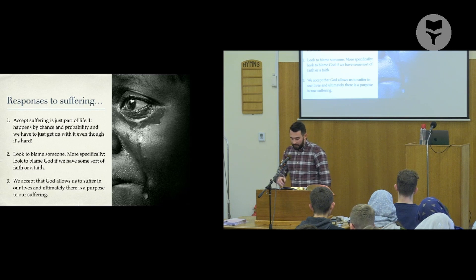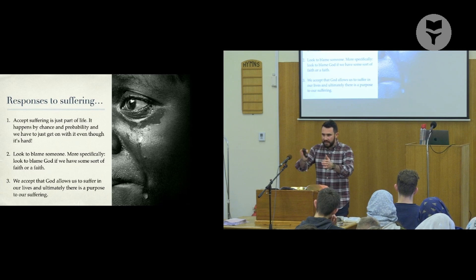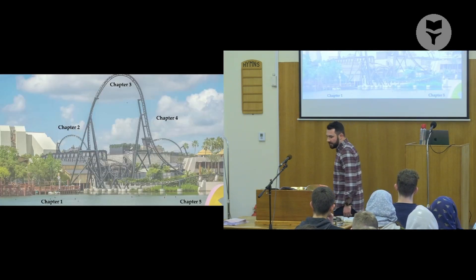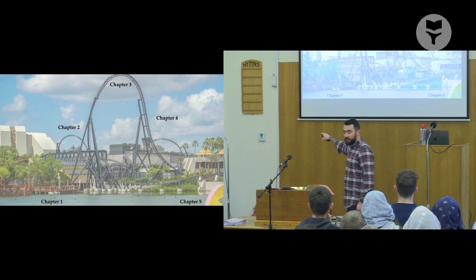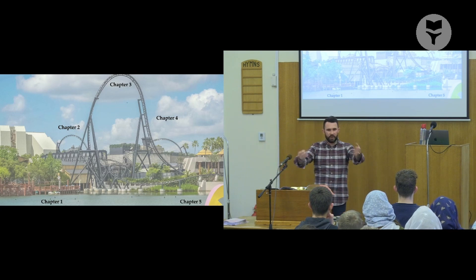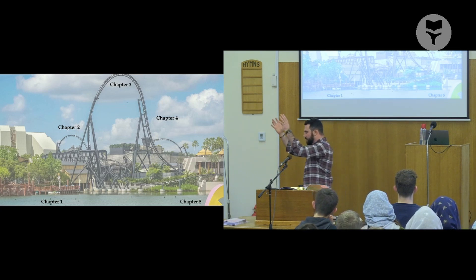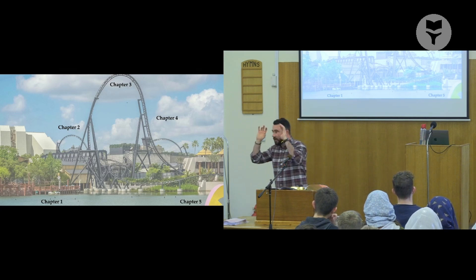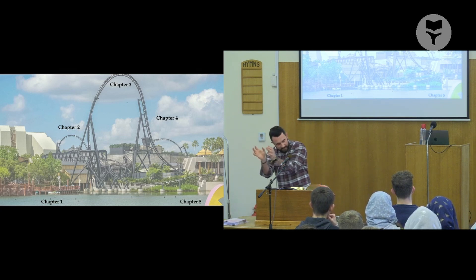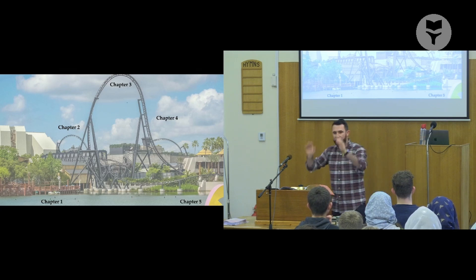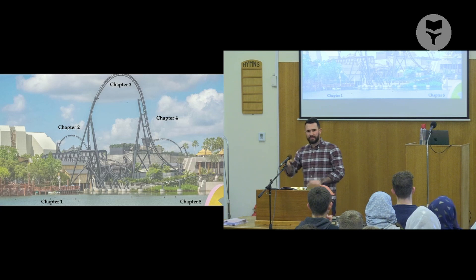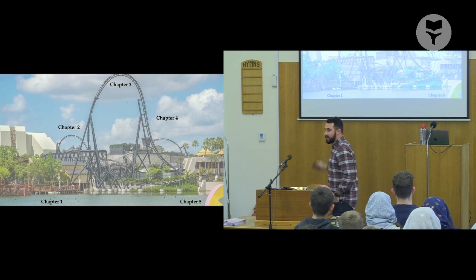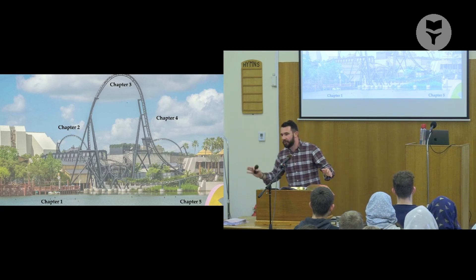If you read Lamentations linearly — chapters one through five — you'd get a picture that starts at a very low point, maybe gets a bit of release in chapter two as blame starts, then in chapter three you're on a spiritual high understanding why suffering happens, but then you start to dip again. By chapter five everything is a mess and disordered again — there is no structure or order to their suffering.